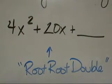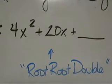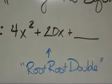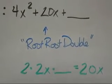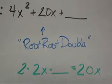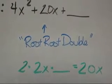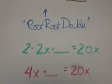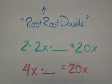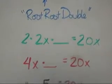Root, root, double. To double something means to multiply by 2, and the square root of 4x² is 2x. So we're trying to figure out 2 times 2x times what number would give me 20x. 2 multiplied by 2x is 4x. So now 4x multiplied by what is 20x? That's 5.